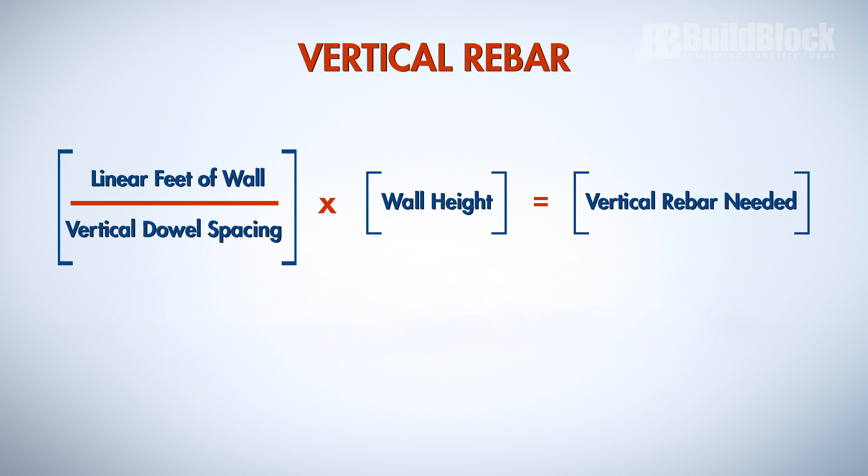For vertical rebar, divide the linear feet of wall by the vertical dowel spacing and then multiply by the wall height.